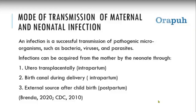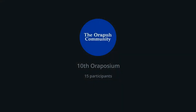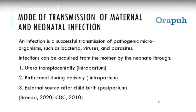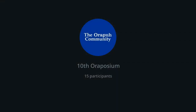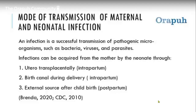Number three: external sources after childbirth. This includes coming in contact with mothers who have tuberculosis, or people who come to visit the child after delivery. Many visitors may carry pathogens, and since the child has not yet developed sufficient immunity to fight infection, the child can easily contract an infection through contact with anyone around — including healthcare personnel.